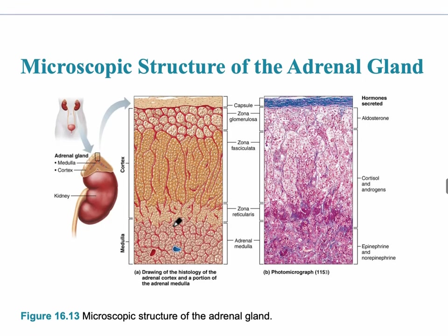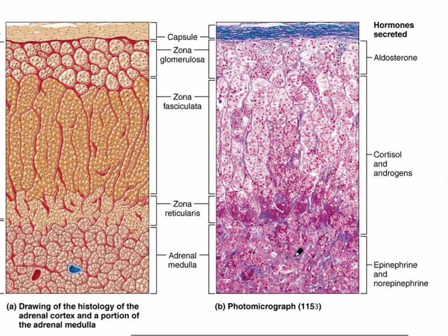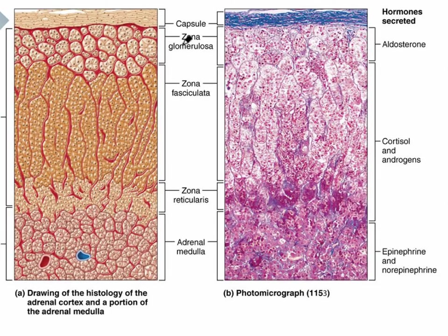The image shown here — on the left in letter A — is a diagram of what the adrenal cortex looks like, and on the right is a photomicrograph of the adrenal cortex. Beginning on the outside is the zona glomerulosa, then the zona fasciculata, then zona reticularis, and the very inside of the adrenal gland is the adrenal medulla.